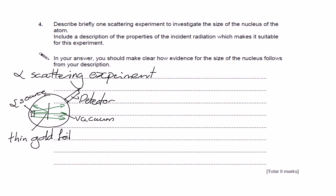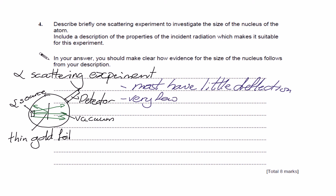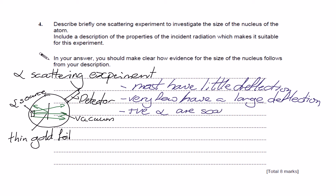Getting on with the actual description: most particles have little deflection, and a very small number deflect with a very large deflection. The reason they deflect is because alpha particles are positively charged, so positive alphas are scattered by the positive nucleus. The mark scheme also awards a mark if you mention this is due to Coulomb's law.